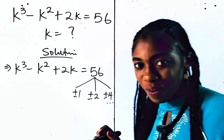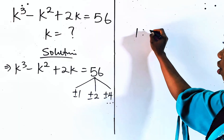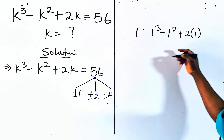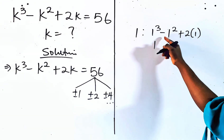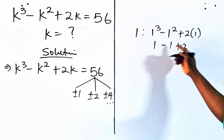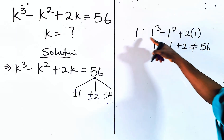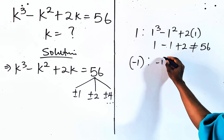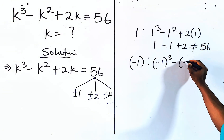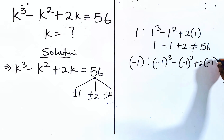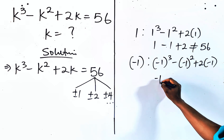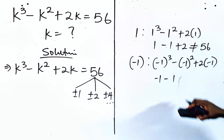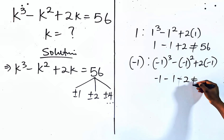Let's check for when k is 1. We have 1 cubed minus 1 squared plus 2 multiplied by 1. When you cube negative it gives you negative, when you square negative it gives you a positive, so you have 1. If you multiply, this is negative 2. And you see this is not equal to 56.